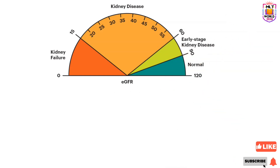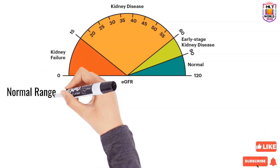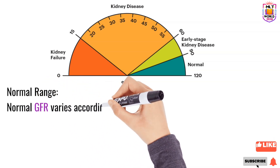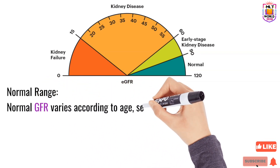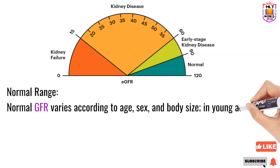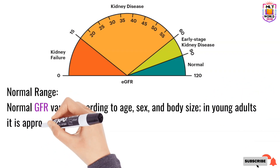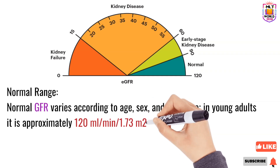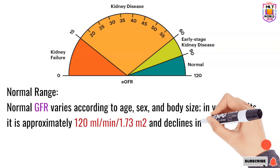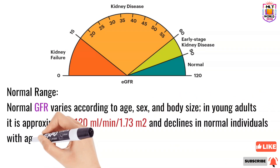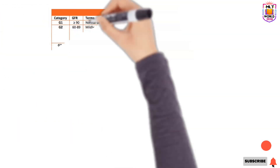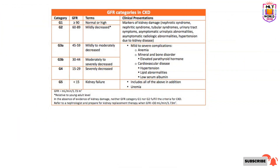Here you can see the diagram. EGFR means estimated GFR. If estimated GFR is 90 to 120, it is normal. If it is 60 to 90, it is showing early kidney disease, progressing toward kidney failure. Normal GFR varies according to age, sex, and body size in young adults, and is approximately 120 ml per minute per 1.73 m². GFR declines with age — as age increases, glomerular filtration rate decreases.